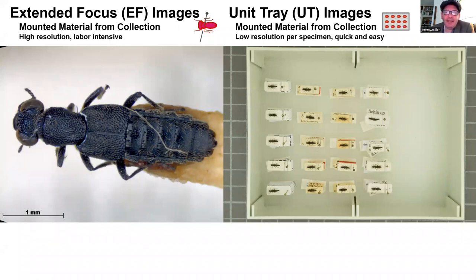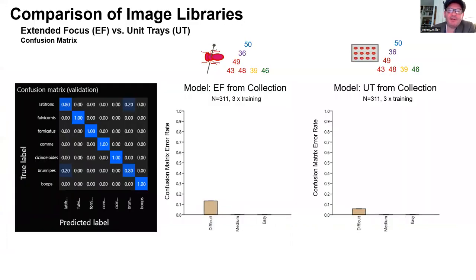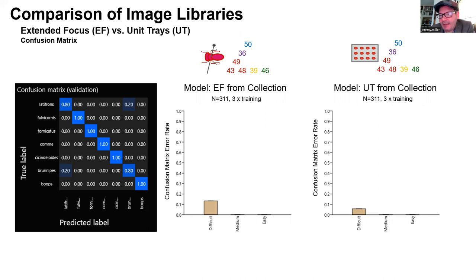Specimens were photographed both individually using the high-resolution extended focus composite image system, and with multiple individuals together in a unit tray. Individual extended focus images are much higher resolution and detail, but also much more time-consuming to produce compared to images of multiple individuals photographed together in a unit tray. This allowed us to explore trade-offs in time, effort, and performance. The first two models consisted of exactly the same 311 specimens across these seven species, photographed alternatively as extended focus images of individuals or as multiple specimens in unit trays. We annotated these data sets in Noose by labeling each specimen according to its taxon, and the program then builds and tests a model based on these annotations. The results are presented in the form of a confusion matrix, indicating which species were misidentified as which others.